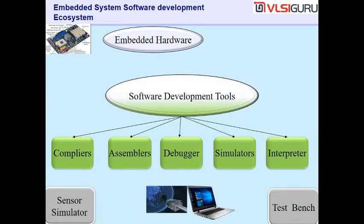The software development ecosystem for an embedded computer means the tools needed for software development. Just like a regular computer, you need compilers, assemblers, debuggers, simulators, and interpreters. Compilers convert your C program into machine language. Assemblers take assembly language programs and convert them to machine language. Debuggers help fix software mistakes. Simulators are useful because it's not always possible to get the real sensors and hardware — a simulator creates a real-world-like environment where you can test your developed software.